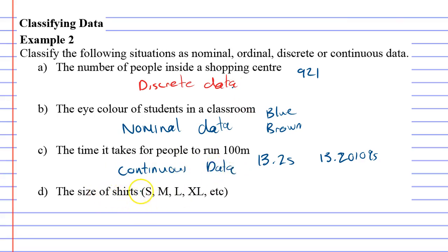And then last of all, the size of shirts, small, medium, large, extra large. Notice that there is an order to this, and that must mean it's ordinal data.